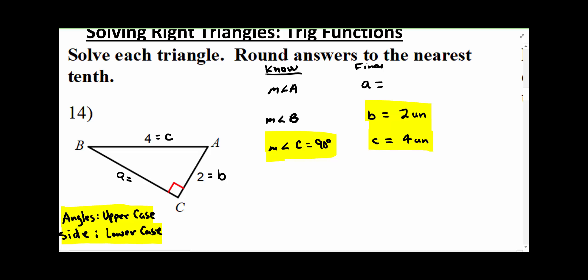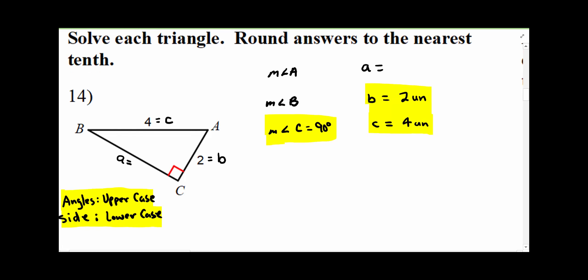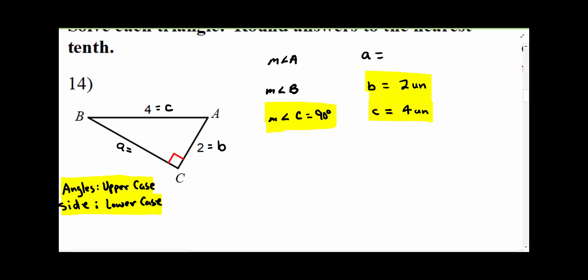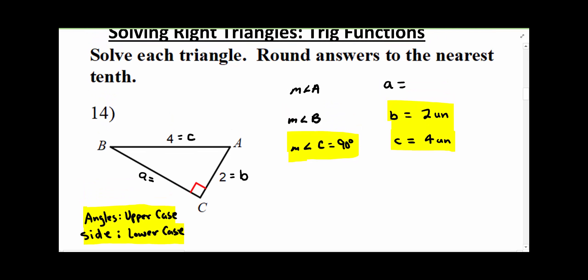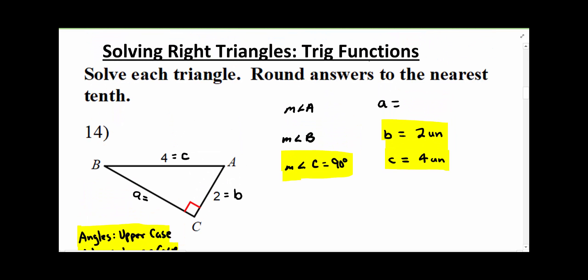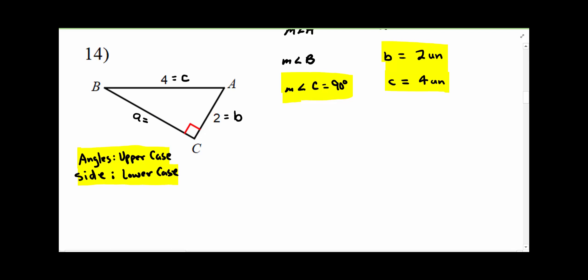You could also do a column. You could put everything you know in one column and everything you need to find in another column. I organized it by all three angles and all three sides and highlighted. So now you're going to use trig ratios or trig functions to find the missing pieces.